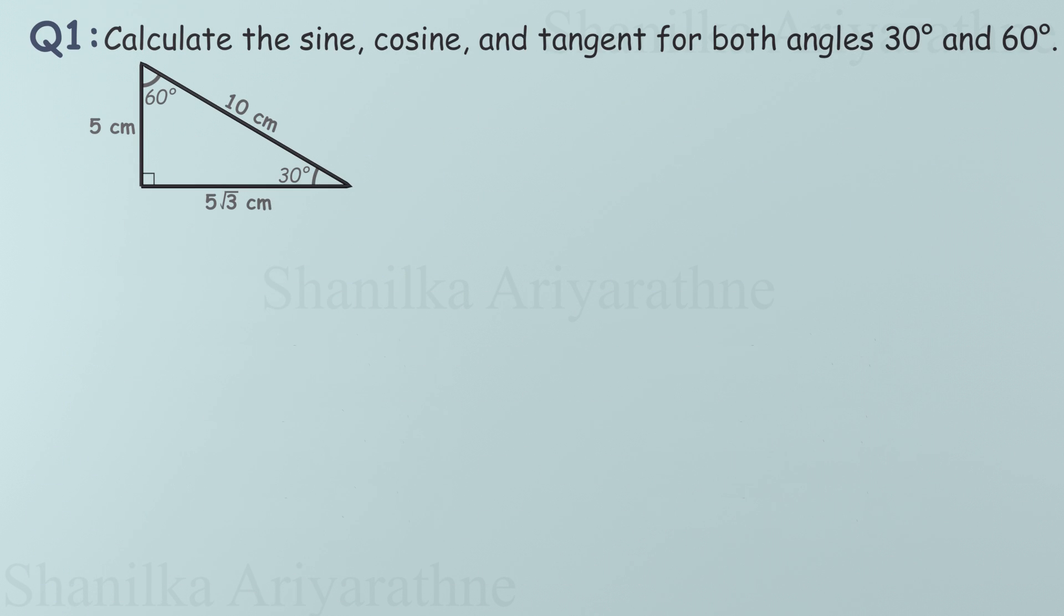All right. Time to put what we've learned into action. Let's calculate the sine, cosine, and tangent for two angles: 30 degrees and 60 degrees. Let's start with the 30 degree angle. Step 1: Identify the sides correctly. The hypotenuse is 10. The opposite side is 5. And the adjacent side is 5√3.